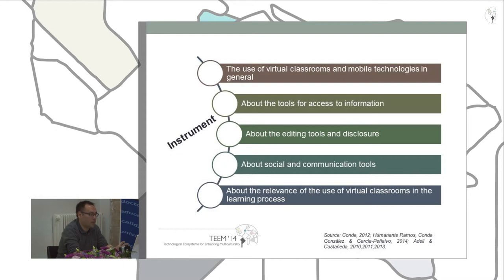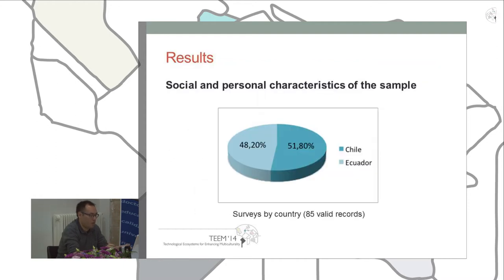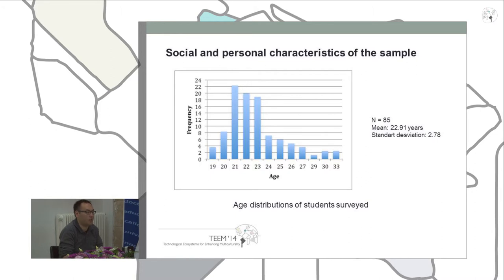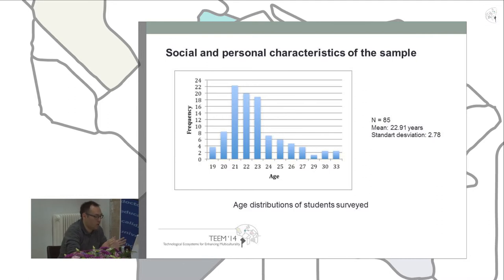What are the initial characteristics of the sample? The total surveys per country yielded 85 valid records: approximately 40% belong to Ecuador and 58% to Chile. Regarding the age distribution, the mean age of respondents is 22.98 years with a standard deviation of 2.78 years, with most participants between 21 and 23 years old, as shown in the graph.